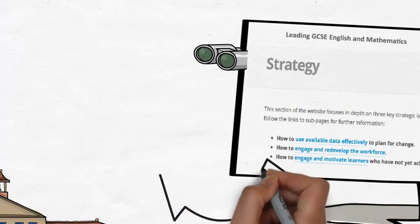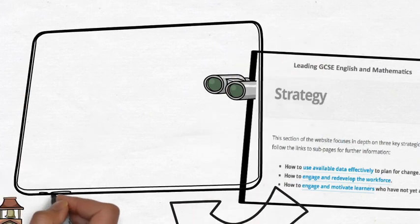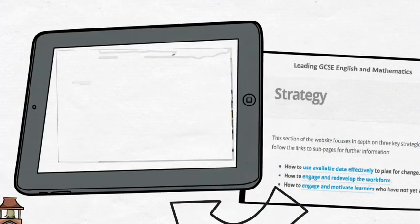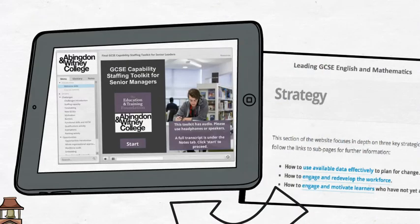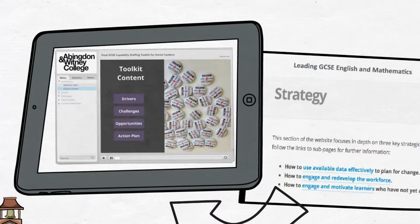Within the engaging and redeveloping staff area you have the opportunity to work through a very useful ECPD module GCSE Capability Staffing Toolkit for Senior Leaders. This mainly audiovisual package produced by Abingdon and Whitney College focuses on the challenges and opportunities to increase staffing capacity to offer English and maths and has a downloadable plan to capture the necessary actions.